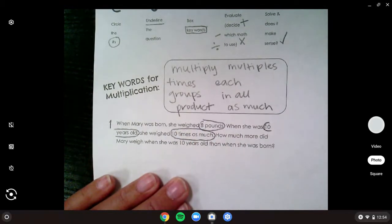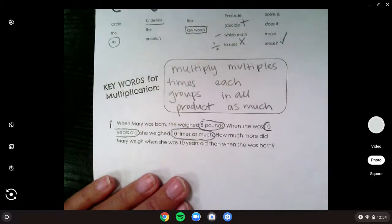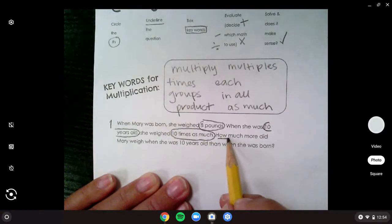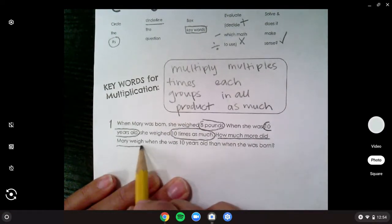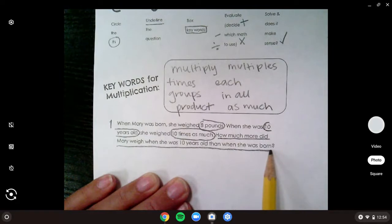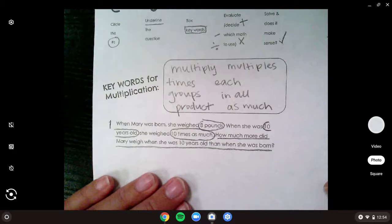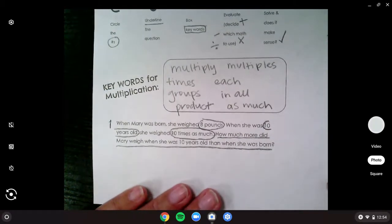And I know ten times as much. It's still one of the numbers too, right? So now I underline the question. I need to underline how much more did Mary weigh when she was ten years old than when she was born?